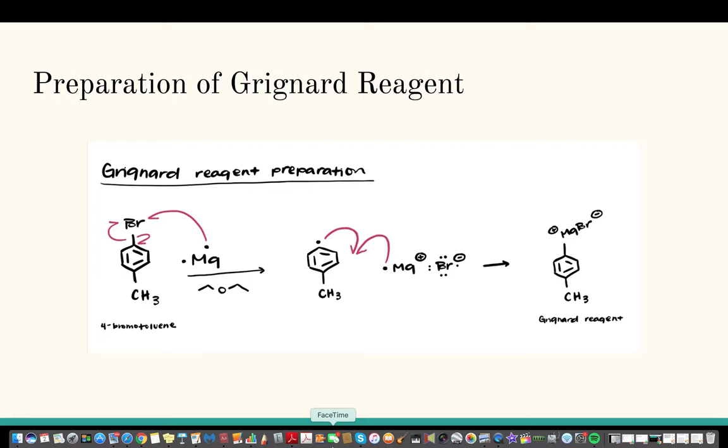When preparing a Grignard Reagent you will combine magnesium with an aryl bromide. In this lab we combined magnesium with 4-bromotoluene and it's a free radical mechanism. So one of the electrons on the magnesium will come up onto the bromine which will break the bond to that aromatic ring there.